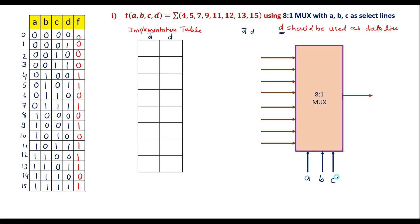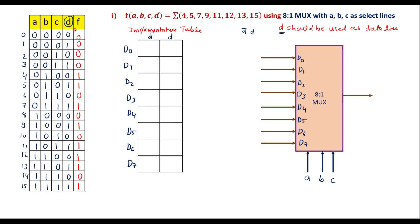For an 8-to-1 MUX, we have 8 data inputs D0 to D7. If we observe the D column, for even-numbered minterms the value of D is 0, and for odd-numbered minterms the value of D is 1. For 0, 2, 4 — all even numbers — D value is 0. For odd numbers 1, 3, 5, 7 — D value is 1.